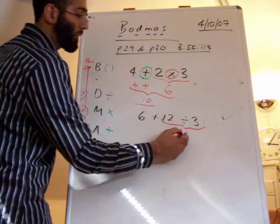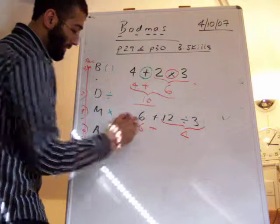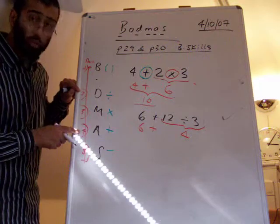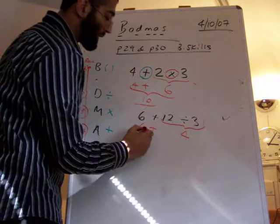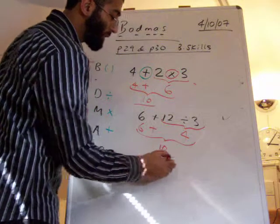So we do 12 divided by 3. That gives you 4. After we've done the division, the next thing for us to do is the adding. So 6 add 4 is 10. So that one also gives us an answer of 10.